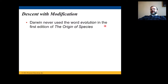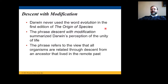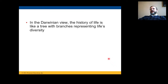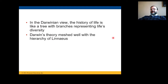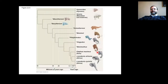Darwin never used the word 'evolution' in the first edition of Origin of Species. The phrase 'descent with modification' summarized Darwin's perception of the unity of life — the view that all organisms are related through descent from an ancestor that lived in the remote past. In the Darwinian view, the history of life is like a tree with branches representing life's diversity. Darwin's theory matched well with the hierarchy of Linnaeus. Today, we can see the same structure in phylogenetic trees.